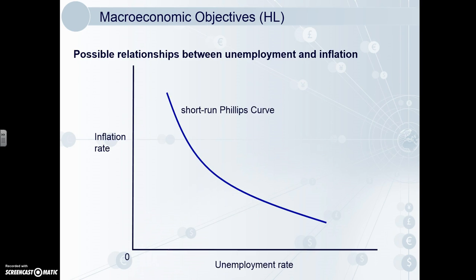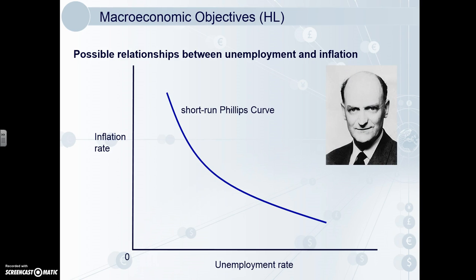Next we'll look at possible relationships between unemployment and inflation. The short run Phillips curve shows an inverse relationship between inflation and unemployment. It's named after William Phillips, a New Zealand-born economist. There often seems to be a trade-off between inflation and unemployment, which will make more sense when we look at an AD-AS diagram on the next slide.